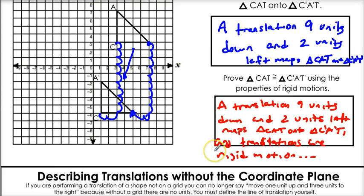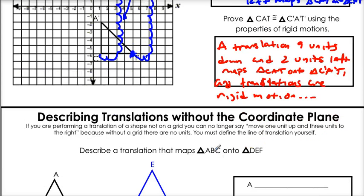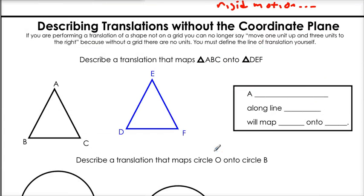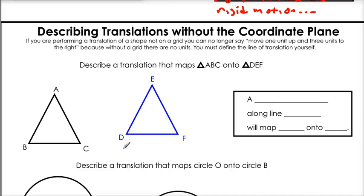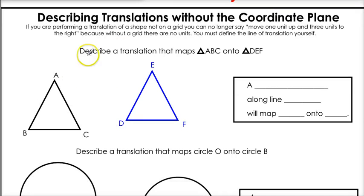Now for the final part of this lesson. We're going to describe translations again, but what's missing? The coordinate plane. So what we're going to use is something called a vector — a line to move along — to map shapes onto each other.